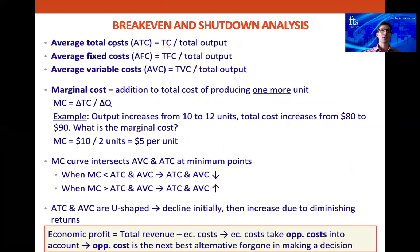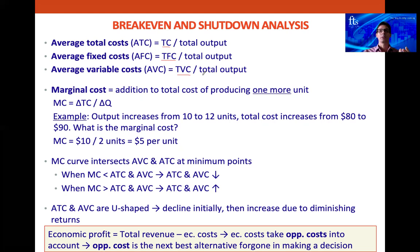Fixed costs are things like rent — whether we make one table or 1,000 tables, the rent remains the same. And then average variable costs — we take our total variable costs and divide by the total output. Variable costs are things that change as our output changes, like materials for making tables: the more tables we make, the more wood we need. So variable costs go up as output increases.